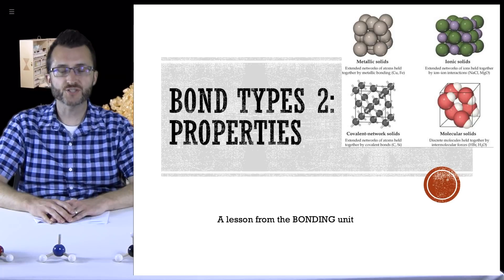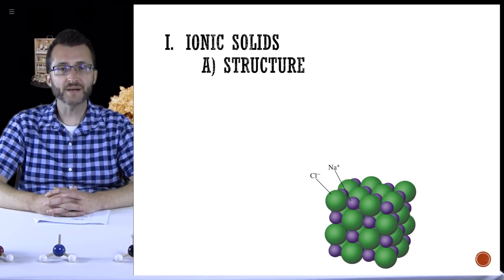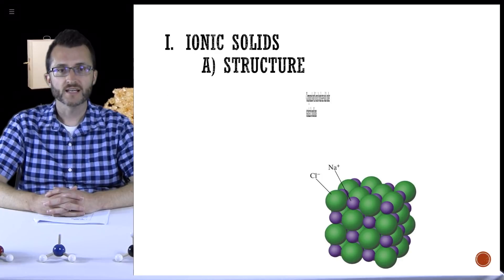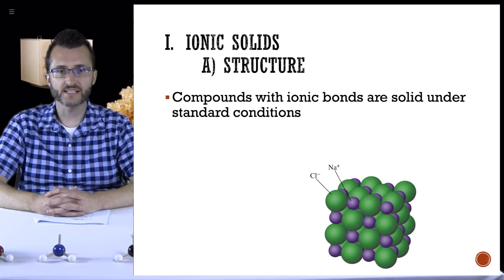Bond Types Two: Properties. A lesson from the bonding unit. Let's begin by talking about ionic solids and their structure. Compounds with ionic bonds are solid under standard conditions.